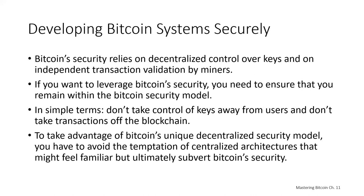For example, many early Bitcoin exchanges concentrated user funds in a hot wallet of keys stored on a server. Such a design removes control from the users and centralizes control over the keys in a single system — many of those systems were hacked and their Bitcoin was stolen. Another common mistake is to take transactions off the blockchain in an effort to reduce transaction fees or accelerate processing. An off-blockchain system will record transactions on an internal centralized ledger and only occasionally synchronize them to the Bitcoin blockchain, substituting decentralized Bitcoin security with a proprietary and centralized approach.